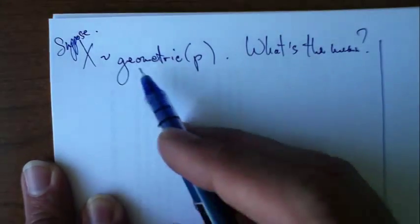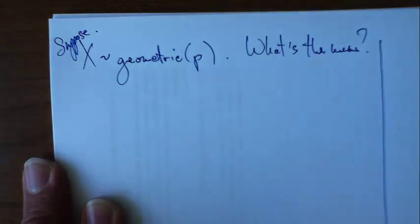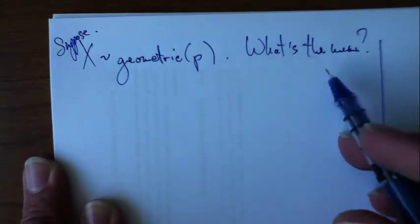Okay, suppose that X has this geometric distribution with parameter p. Then what's the mean?